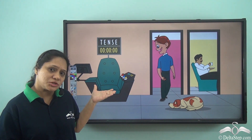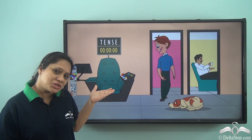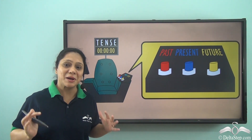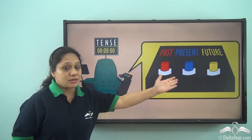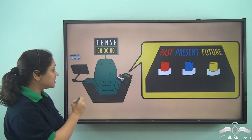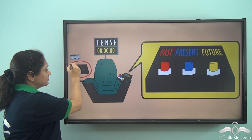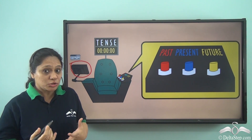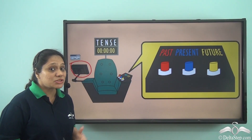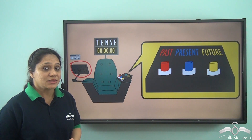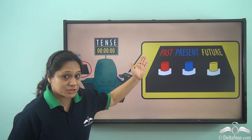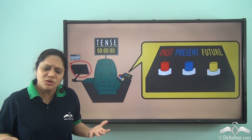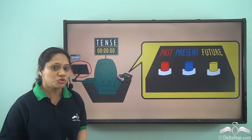A funny looking machine. What does this machine have? This machine has a nice comfortable chair, lots of buttons and a screen. John gets very excited. He wants to see what the buttons do. So he sits on this chair and he sees that it's written: past, present, future — but he doesn't know what this means or what these buttons do.